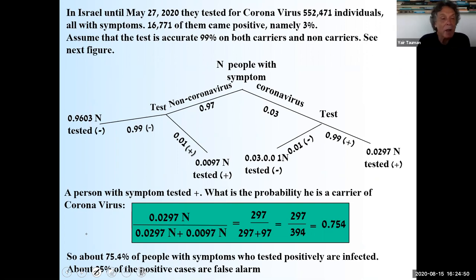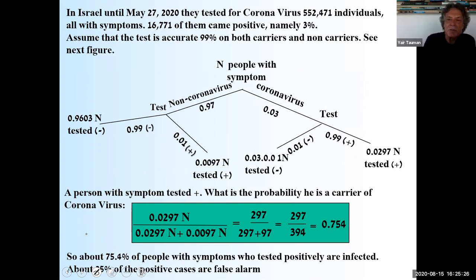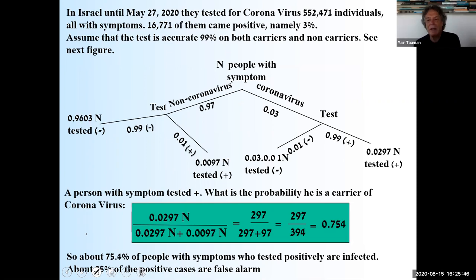Now I want to move to something very new. In Israel, until May 27, 2020, the total number of people tested for coronavirus was 552,471 individuals — all with symptoms, since at that time only symptomatic people could take the test. Of those tested, 3% — actually 16,771 — came back positive. Assume the test is 99% accurate on both carriers and non-carriers.